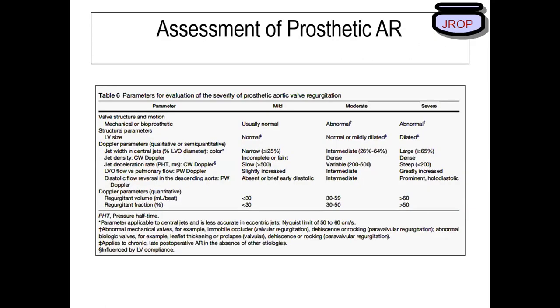A prosthetic aortic regurgitation picture is not available here, but the principles are the same. When there is a paraprosthetic leak, similar features of regurgitation can be detected using the same Doppler and color flow techniques described.